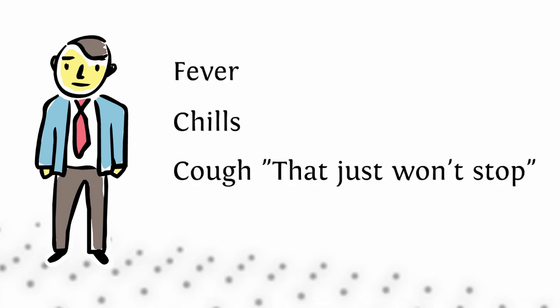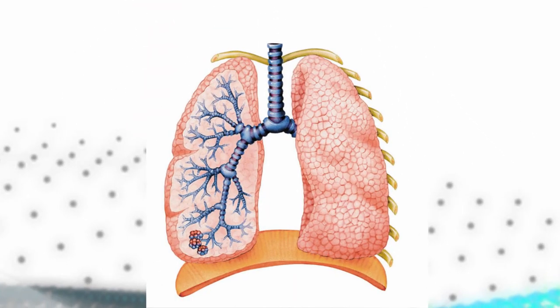Bob comes to the clinic and he complains about fever, chills, cough that just won't stop, and some chest pain. If you see someone coming in with these concerns and symptoms, you need to start thinking about pneumonia, particularly if the cough is productive, if the cough has wet sputum or pus coming out of it. To have a better idea of what that looks like, we're going to go on to the next section to describe precisely what pneumonia is.